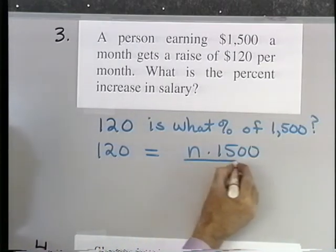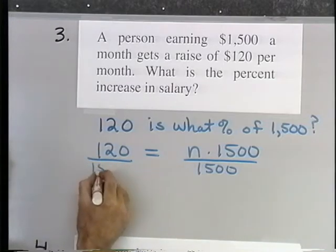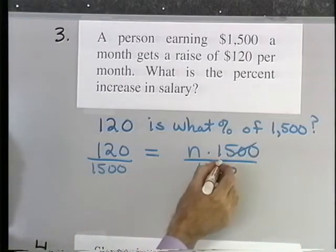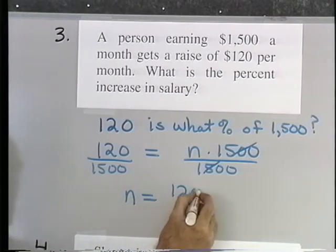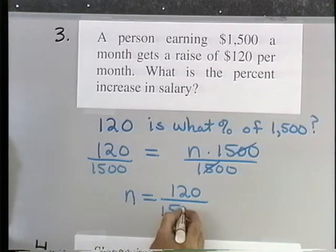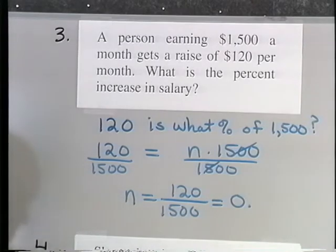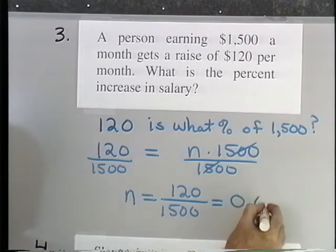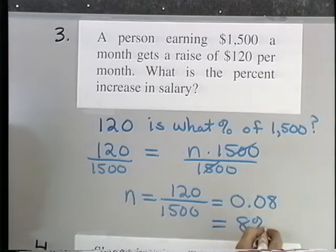To solve this equation, I divide both sides by $1,500. These will divide out, and I'll have just N is equal to $120 divided by $1,500. If I do that arithmetic, I end up with 0.08, and so I end up with 8%.